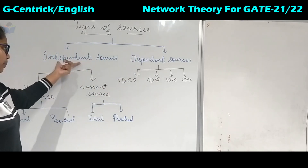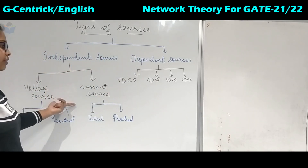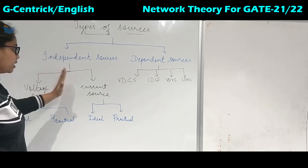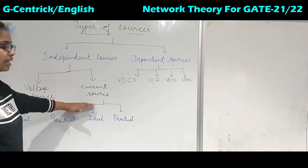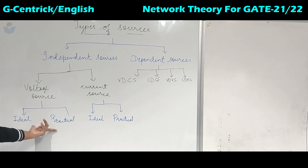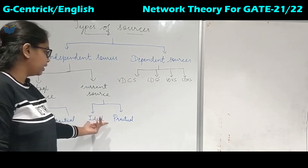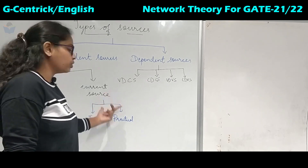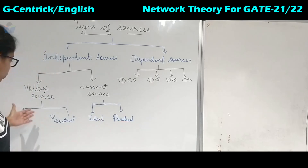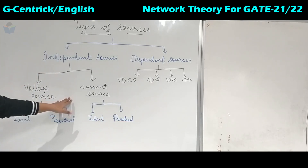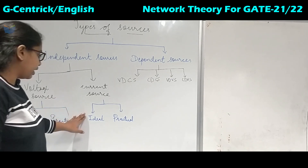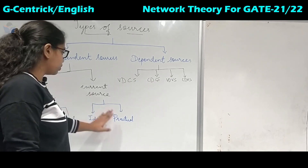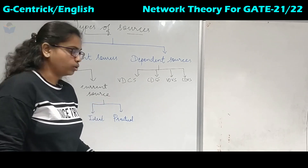Under independent sources, we have two types: voltage source and current source. For each of these, we have two more categories — ideal and practical. So together there are four categories: ideal voltage source, practical voltage source, ideal current source, and practical current source.